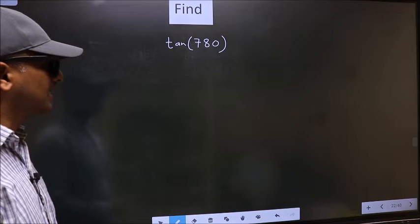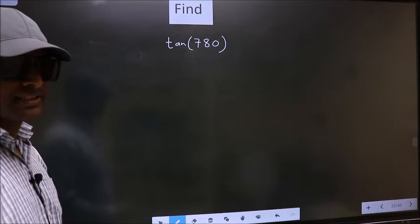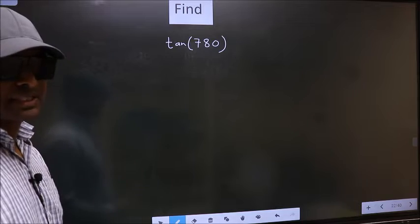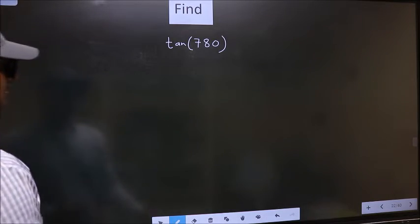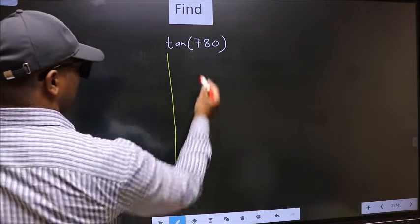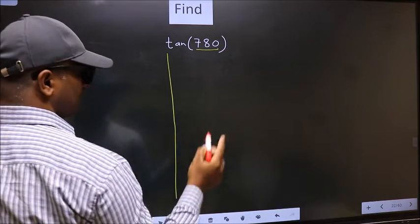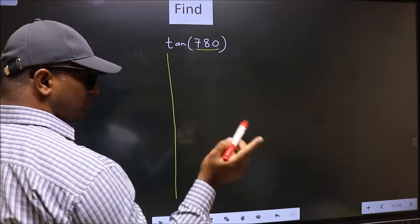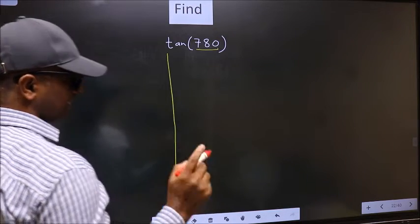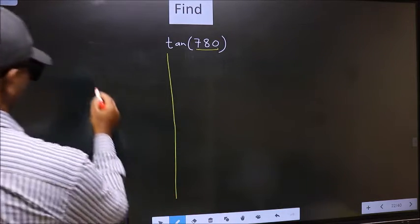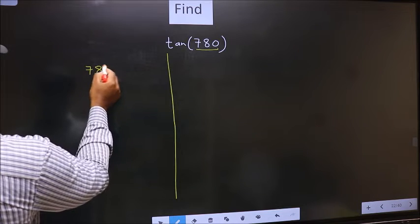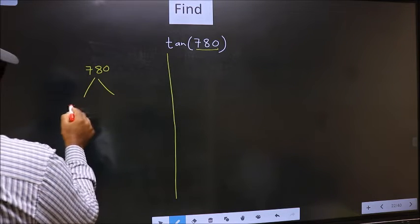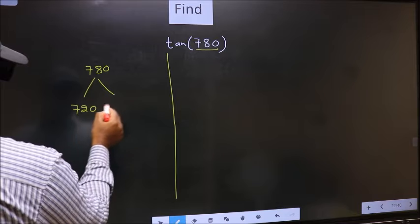Find tan 780. To find this, we should follow this method. Here we have 780. Now we should check 780 lies between which two multiples of 180. What I mean is, 780 lies between 720 and 900.